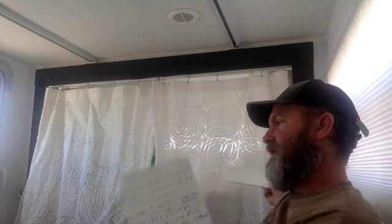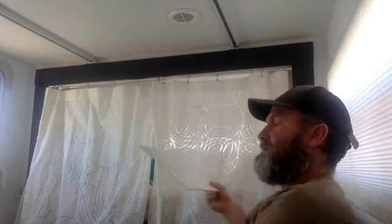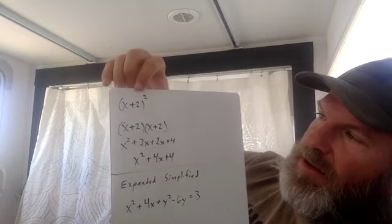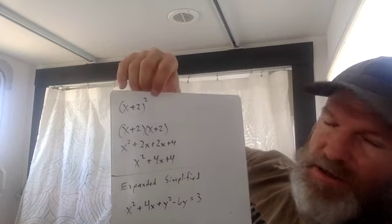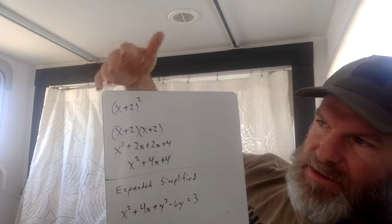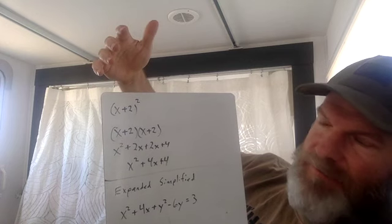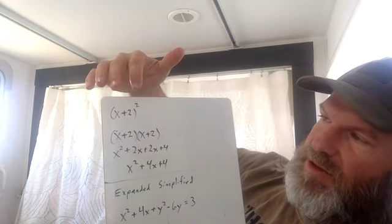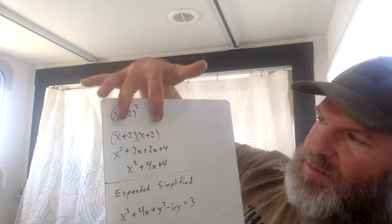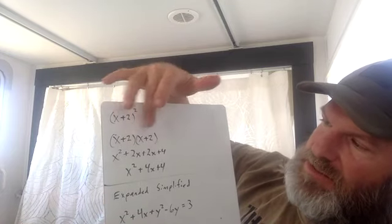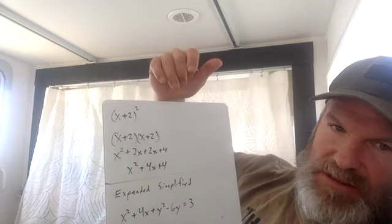That's review from algebra — let me show you how to expand x plus two squared. When you square something you multiply it by itself: three squared is three times three. Same thing with a parenthesis — if you square a parenthesis you multiply that parenthesis by itself. So x plus two times x plus two.